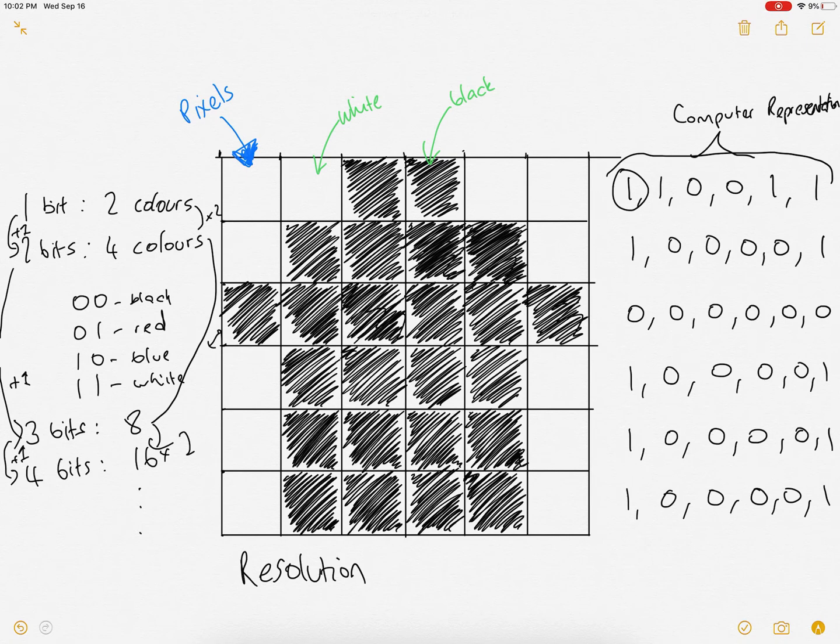So the resolution of this graphic in front of us, if we have a look, would be we've got six pixels across so it'd be six by six. So this is a six by six resolution graphic. It's got six pixels across and six pixels down.